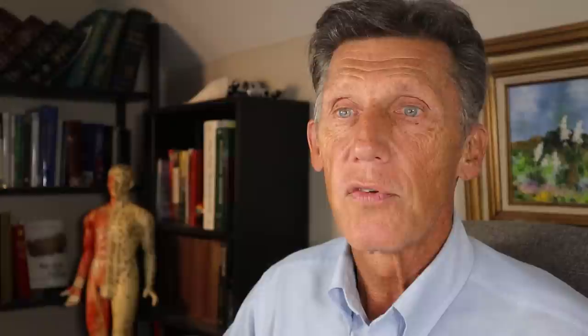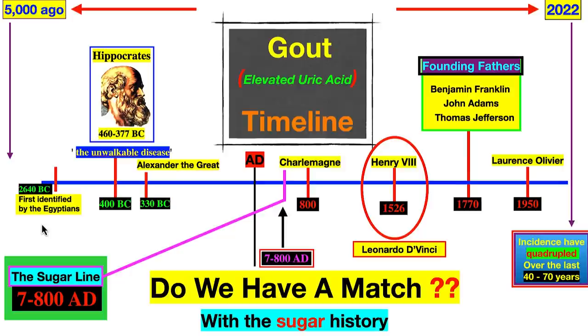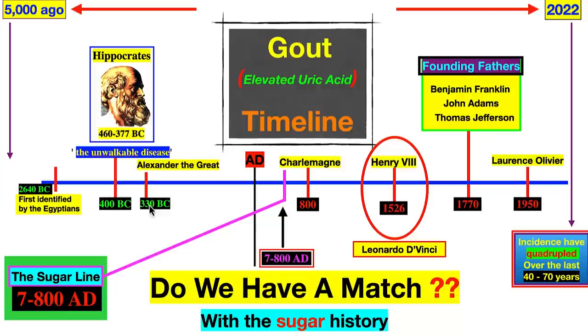Here's the gout timeline up to the present. The first documented case was around 2,640 BC — about 5,000 years ago. Then we have Hippocrates at 400 BC and Alexander the Great, who had gout at a very young age. After the sugar divide line of 700–800 AD, we have Charlemagne, Henry VIII, Leonardo da Vinci. Then into the 1700s all the founding fathers had gout. The theme is continuing, and so far we're looking at three variables: purines from hunter-gatherer times, then grains and alcohol, then sugar.